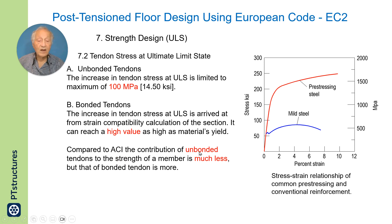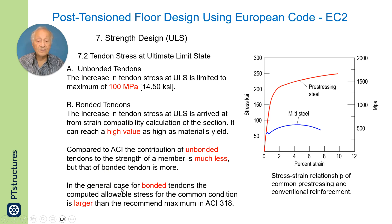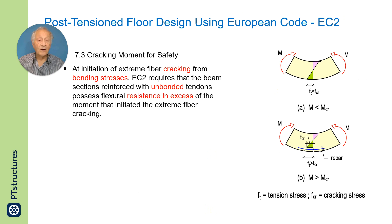The contribution of unbonded tendons to the strength of a member is much less than that of bonded tendons. In the general case, the computed allowable stress for bonded tendons is much larger than what is recommended in ACI, so bonded tendons are much more preferred in terms of allowable stress values when using EC2.